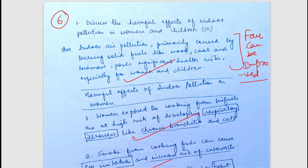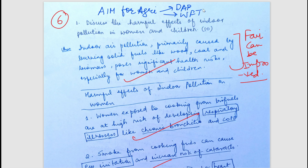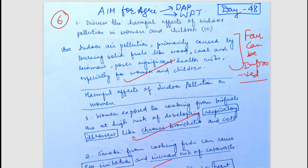Hello everyone, hope you all are doing well. Today we are going to discuss the next answer copy of our Aim for Agriculture series, where we have daily answer writing practice and weekly full tests. We are going to discuss the copy of Day 48, having already discussed copies till Day 47. By analyzing these answers you can improve your answer writing — how to structure, introduce, conclude, add examples, and include diagrams whenever necessary.